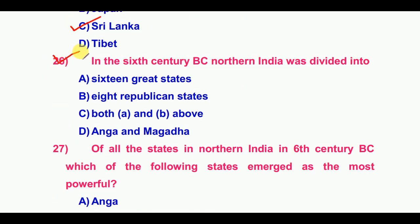In the sixth century BC, northern India was divided into — the answer is option C: both 16 great states (Mahajanapadas) and 8 Republican states.